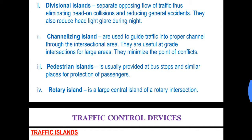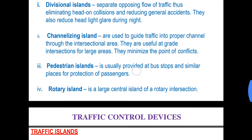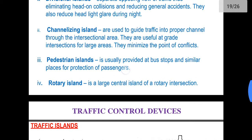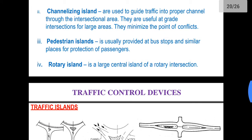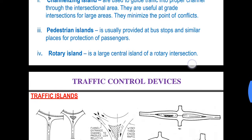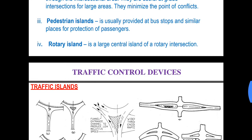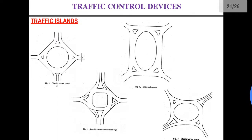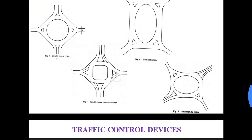Pedestrian islands are usually provided at bus stops and similar places for the protection of pedestrians. Rotary islands are a large central island of a rotary intersection. Here is an example of a rotary island.